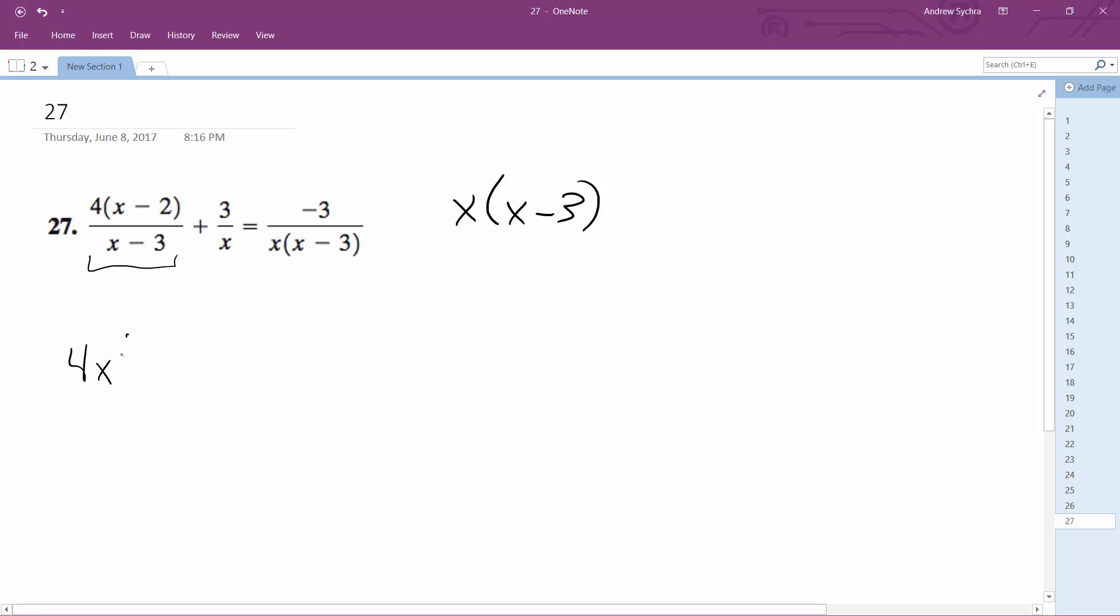4x, 4x times x minus 2 plus, and then here we're missing the x minus 3, so 3 quantity x minus 3, is equal to,